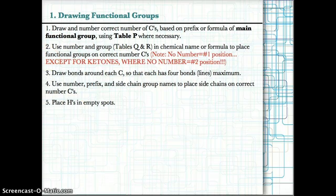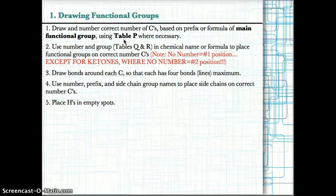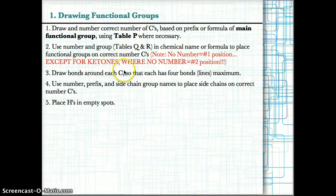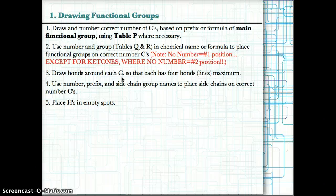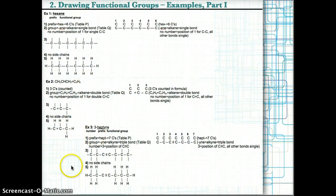How to draw structural formulas for functional groups — follow these five steps. Step one: draw the correct number of carbons based on the prefix or formula of the main functional group, using table P where necessary. Step two: use the number in the name along with tables Q and R to place functional groups on the correct carbons. Note: if there's no number, the functional group is at position one — except for ketones, where no number means position two. Step three: draw bonds around each carbon so each has four bonds maximum. Step four: use number, prefix, and side chain group names to place side chains on the correct carbons. Step five: place H's in the remaining empty spots.